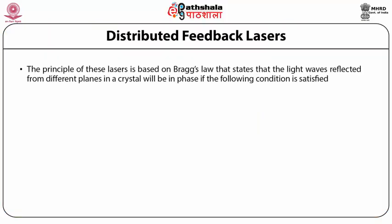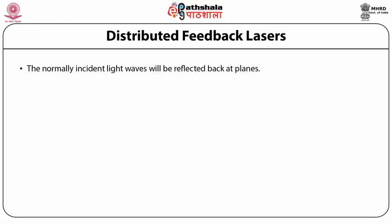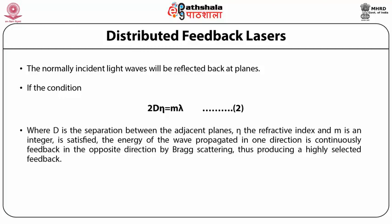Herwig Kogelnik and Charles Shank in 1971 invented the distributed feedback laser, which today is the light source for almost all optical communication systems. The principle of these lasers is based on Bragg's law, which states that light waves reflected from different planes in a crystal will be in phase if the condition 2d sin θ = mλ is satisfied, where theta is the glancing angle. For normally incident light, the condition becomes 2dn = mλ, where d is the separation between adjacent planes, n is the refractive index, and m is an integer. The energy of the wave propagated in one direction is continuously fed back in the opposite direction by Bragg scattering, producing a highly selective feedback.